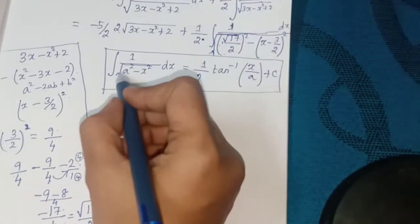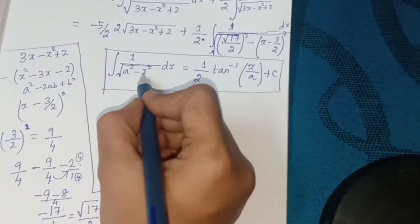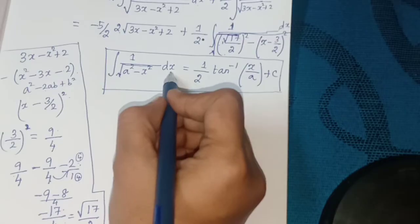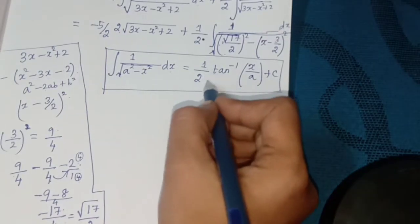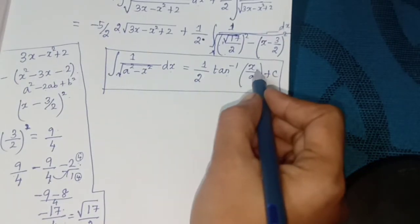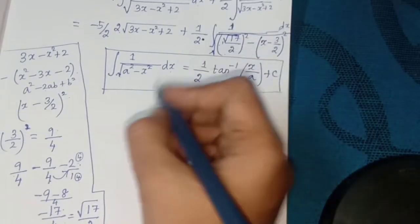The formula is: ∫ 1 / √(a² - x²) dx = sin⁻¹(x/a) + C.